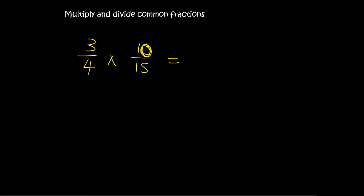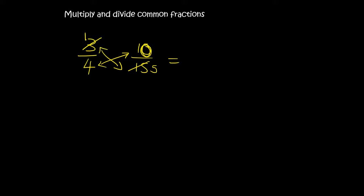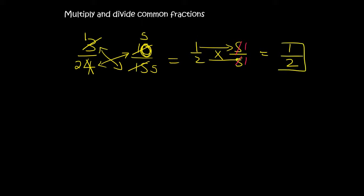Here's another one. Remember, the arrows of multiplication remind you that you can cross-cancel. For 3 and 15: what number can go into both? 3 — it goes into itself once and into 15 five times. For 4 and 10: the number 2 — it goes into 4 twice and into 10 five times. You can also cancel vertically: 5 goes into both 5s once each. Now going across: 1 times 1 is 1 and 2 times 1 is 2, so the answer is 1 over 2.